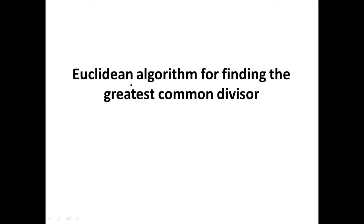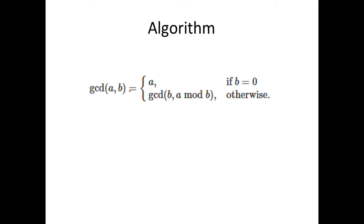Let us take a look at the Euclidean algorithm for finding the greatest common divisor. So this is the algorithm: GCD of a, b is equal to a when b is equal to 0, or else GCD of a, b is nothing but GCD of b, a mod b.